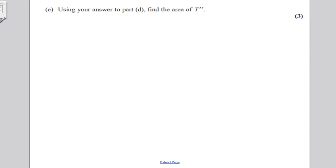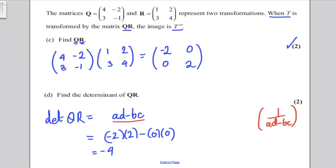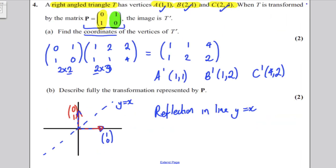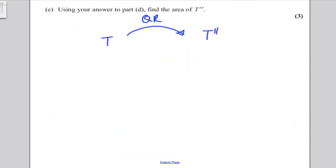And for part E, using your answer to part D, find the area of T prime primed. Well, let's just think what happens. We've got our triangle T, and we apply the matrix QR to it, and we get T prime primed. Now, the matrix T, the original T we should draw is 1, 1, 2, 1, and 2, 4. So, let's just a quick sketch of it.